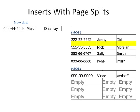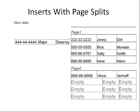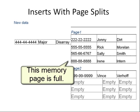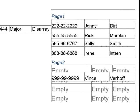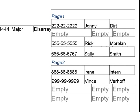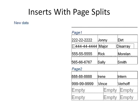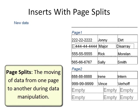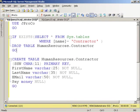Problems arise when you encounter a phenomenon called page splits. A new hire named Major Disarray has a social security number starting in the fours — he should go right after Johnny but before Rick. There's no room in that memory page, so Vince moves down, Irene jumps to a new memory page, the other records shift, and Major Disarray slips in. This is a page split — the moving of data from one page to another during data manipulation. Page splits are very bad for performance, and there are techniques to reduce or eliminate them.